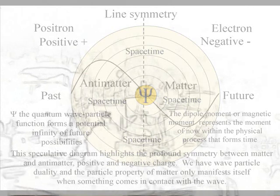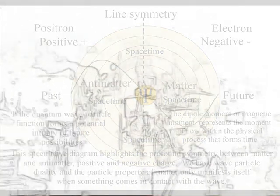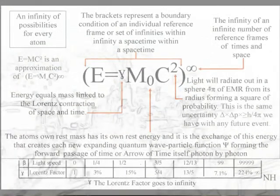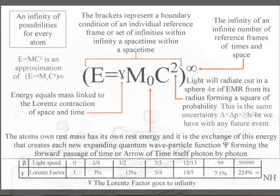The deep fundamental difference between quantum and classical mechanics is that quantum mechanics represents the forward passage of time itself.